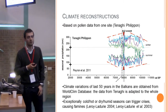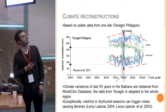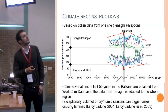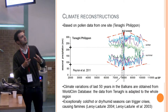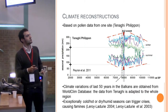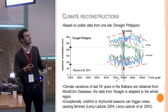Another thing implemented in the model is climate reconstruction. It is based on pollen data from the site of Tenagi-Philippon, which provides seasonal precipitation and temperature reconstruction for the period of interest. The climate variation of the last 50 years in the Balkans is obtained from the World Climate Database. In this way, the original data from Tenagi is adapted to the entire Balkan region, making it possible to have an estimation of temperature and precipitation for the whole region and the whole period of the simulation.